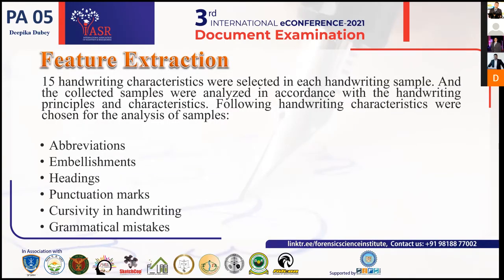These 15 characteristics were: abbreviations, embellishments, headings — whether centrally aligned or on the left or right side of the paragraph — cursivity in their handwriting, punctuation marks and whether correct punctuation was used at correct places, and certain formations of letters that were also studied.